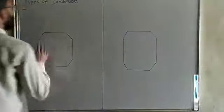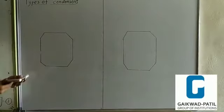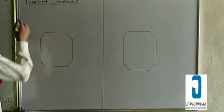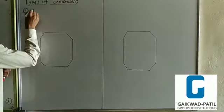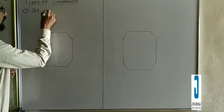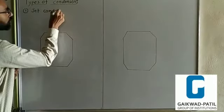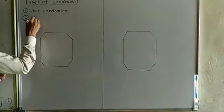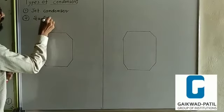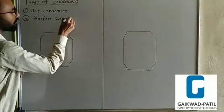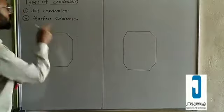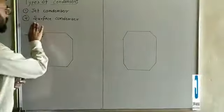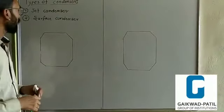Look at here — the types of condenser. There are two types of condenser. The first one is the jet condenser, and the second one is the surface condenser. The jet condenser is further divided into four parts, and the surface condenser also has four parts.